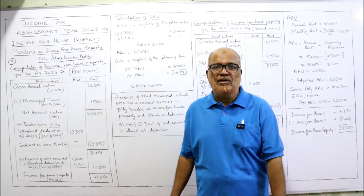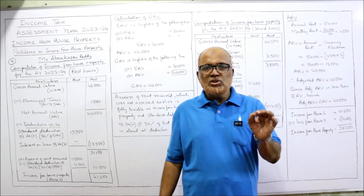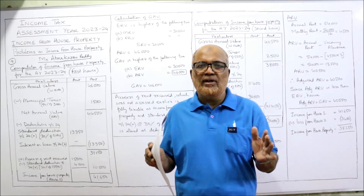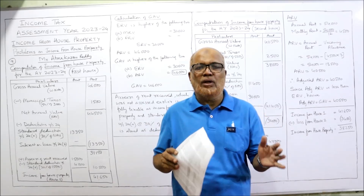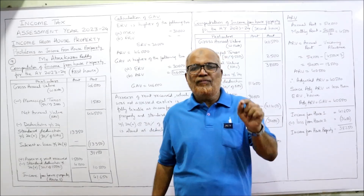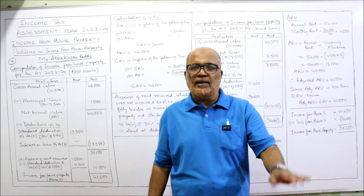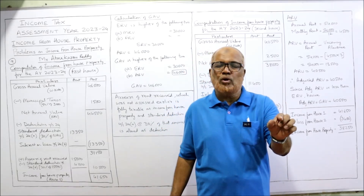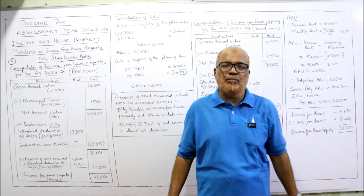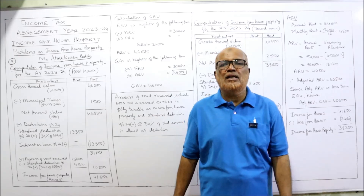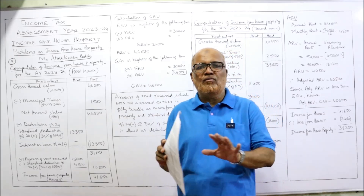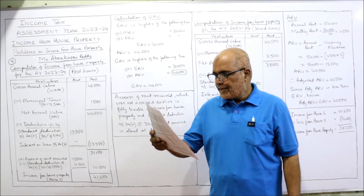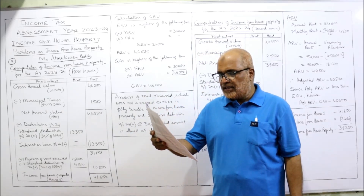Under the agreement, 50% of municipal taxes are to be borne by the tenant. The Income Tax Act provision states that municipal taxes will be allowed as a reduction only if paid by the owner; if paid by the tenant, it is not allowed. So here, 50% is borne by the owner and 50% by the tenant, so only 50% will be allowed as deduction.